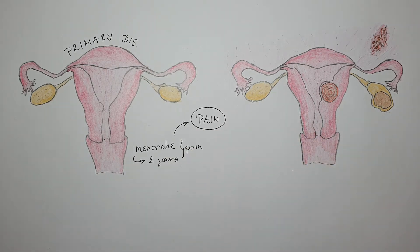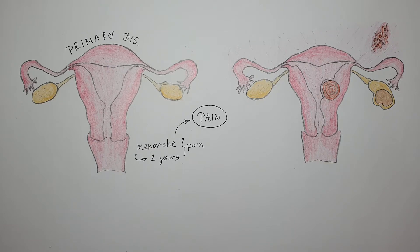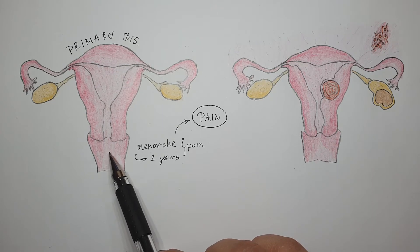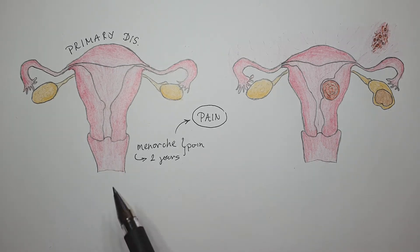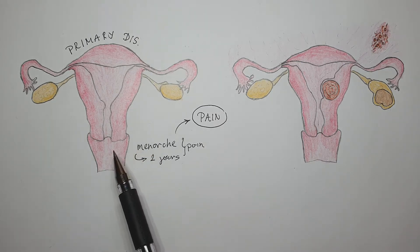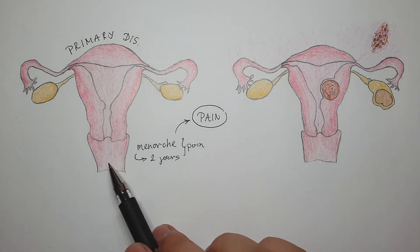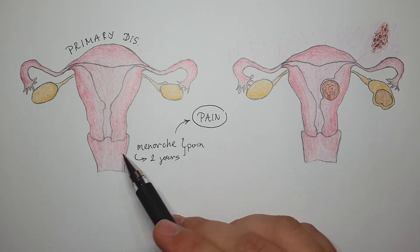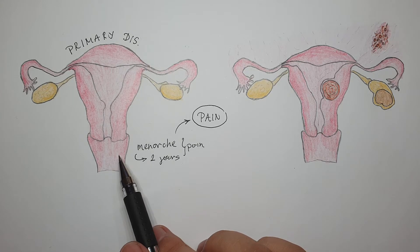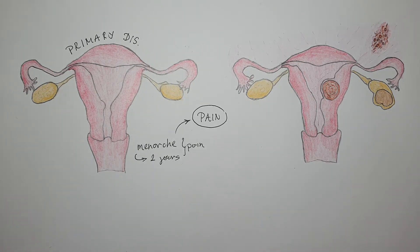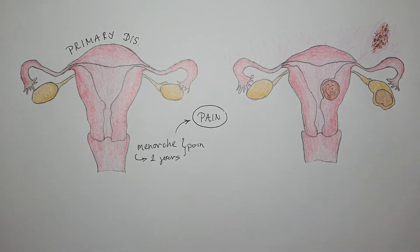The etiology of primary dysmenorrhea is a little unclear, though there is a significant theory about it. A main element when talking about etiology is that if we look at the genital system in these cases — these are young females — the genital system shows no pathological changes. In the majority of cases, the genital system is normal; however you examine it, whether by ultrasound, it will appear normal.